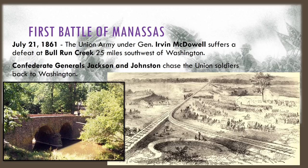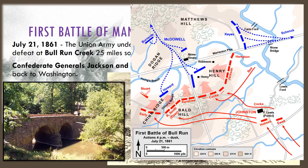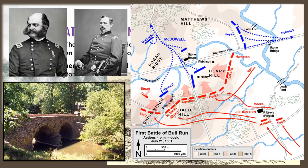Within a few short months, the Confederate troops march to Virginia and begin to encroach on the capital of the Union. All the troops in Washington DC are ready for a fight and both armies meet for the first time at the First Battle of Manassas, also known as the First Battle of Bull Run. This is considered the first major battle of the Civil War. On July 21, 1861, the Union Army under General Irvin McDowell and General Ambrose Burnside suffer a defeat at Bull Run Creek, 25 miles southwest of Washington.